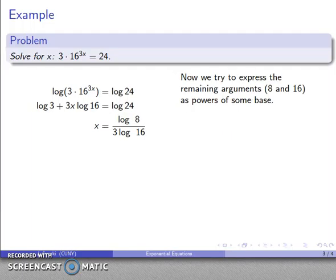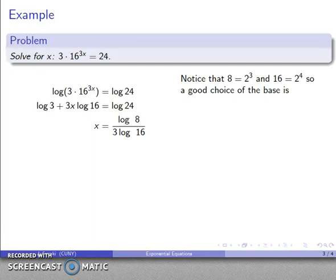I haven't specified what the base is, so I can leave it in this form if there's no obvious base. But I do want to see if I can express the remaining arguments, 8 and 16, as powers of some base. I might notice that 8 is 2 to the third power and 16 is 2 to the fourth power. Both 8 and 16 are powers of 2, so a good choice of base is going to be—well, they're both powers of 2, so I should use 2 as the base of my logs.